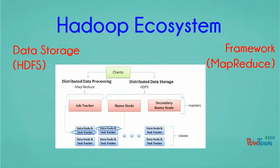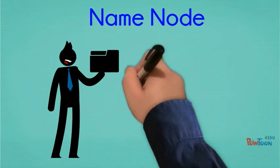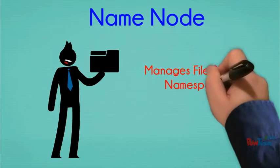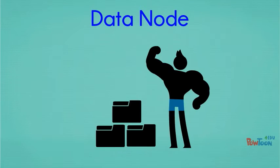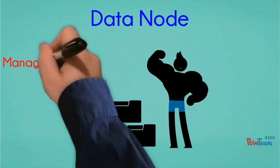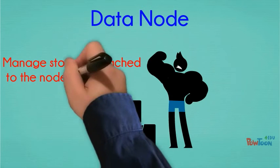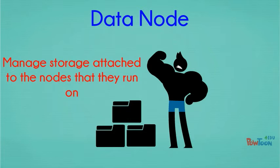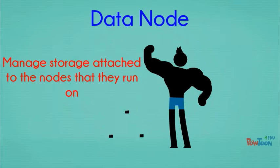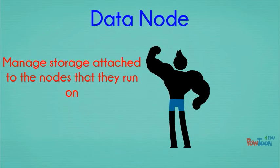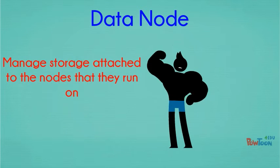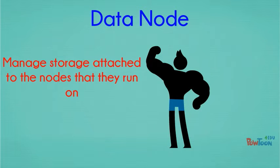Each HDFS cluster is simply a group of servers containing the following. A name node is a master server that manages the file system namespace and regulates access to files by clients. Data nodes, usually one per node in the cluster, manage storage attached to the nodes that they run on. The name node instructs data files to be split into blocks, each of which are replicated three times and stored on machines across the cluster. These replicas ensure that the entire system won't go down if one server fails or is taken offline.